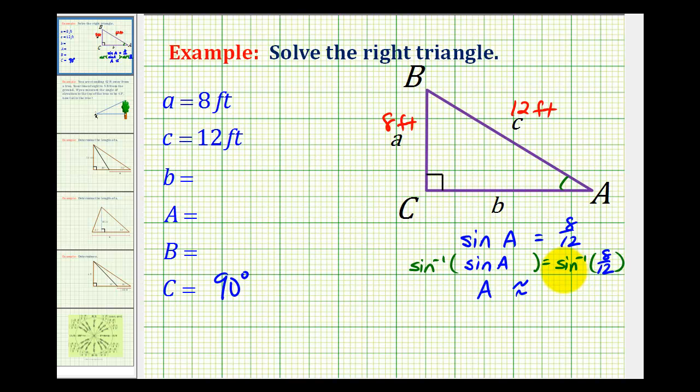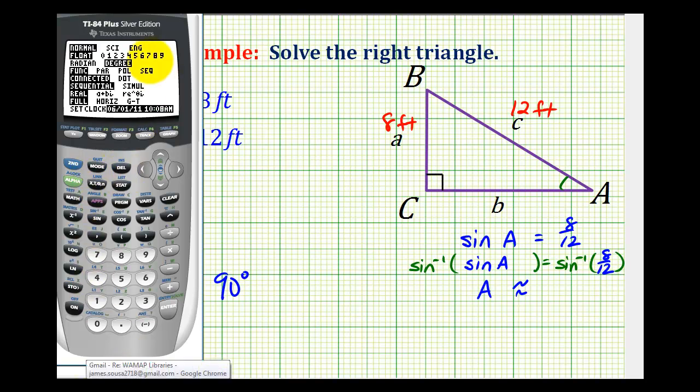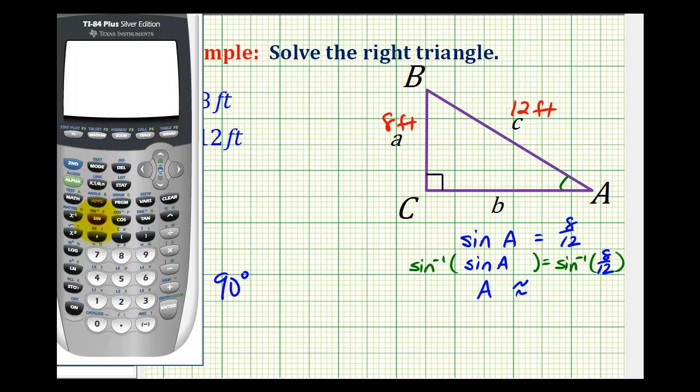And then we can use our calculator to evaluate inverse sine 8 twelfths, which will return an angle that has a sine function value of 8 twelfths. Let's start by making sure that we're in degree mode. We are. Now we'll go back to the home screen, press second sine for inverse sine, and then 8 divided by 12. Press enter. And so angle A is approximately 41.8 degrees.